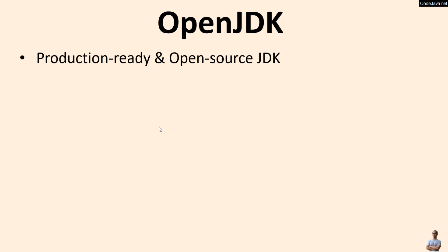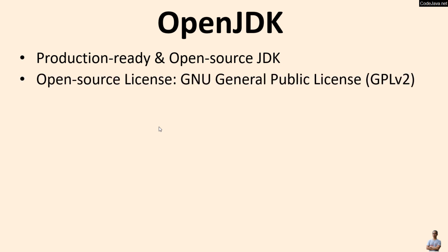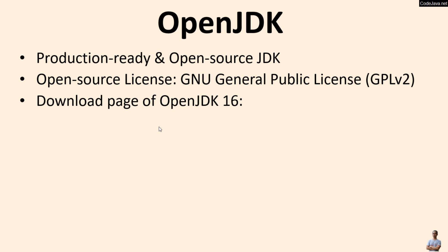OpenJDK is the production-ready and open-source Java development kit. It is licensed under the GNU General Public License, which means you can use OpenJDK for personal purposes as well as commercial purposes. This is the official download page of OpenJDK 16.